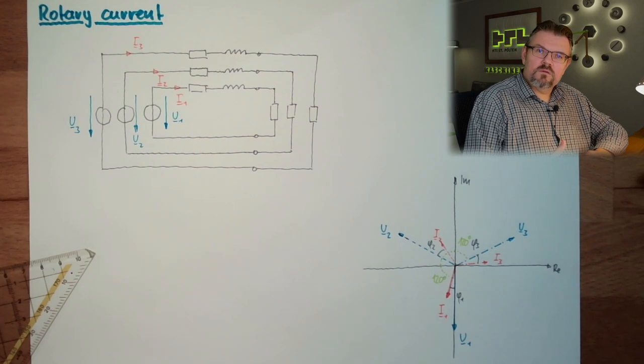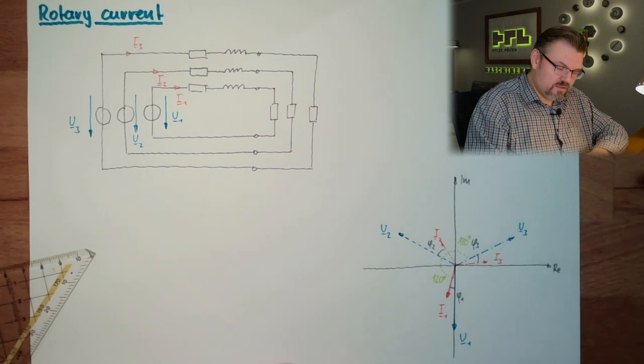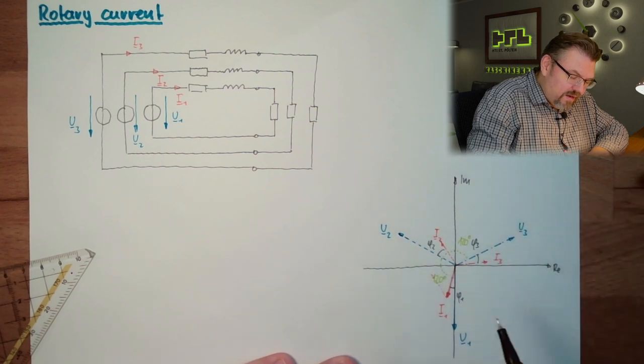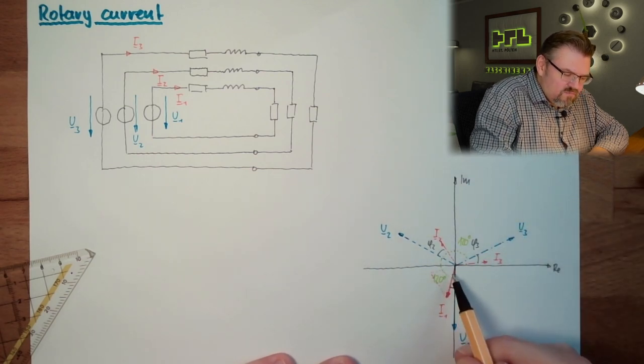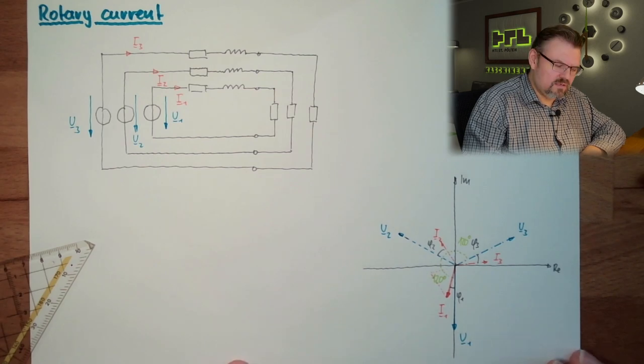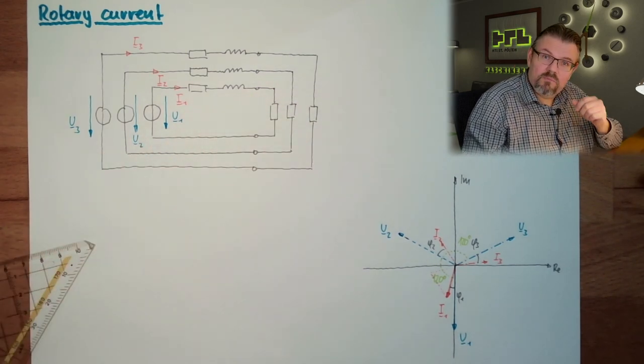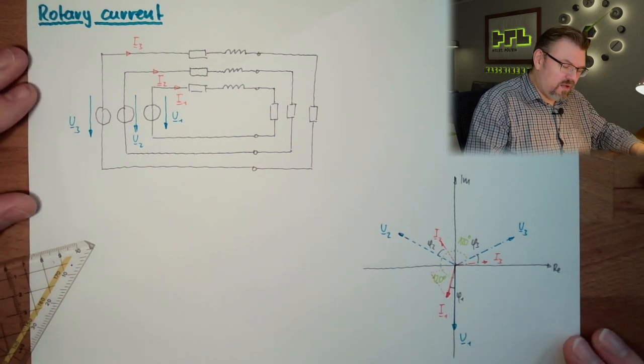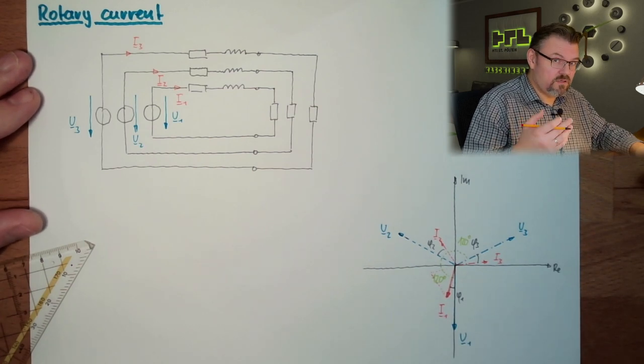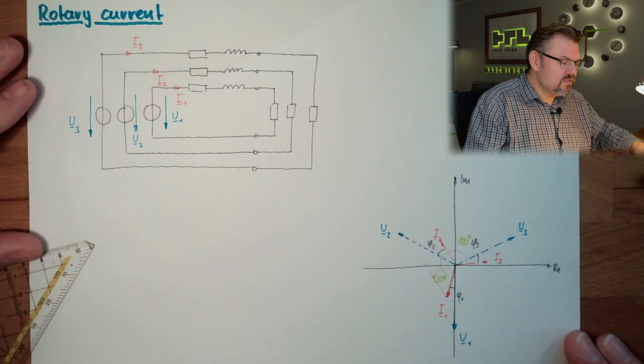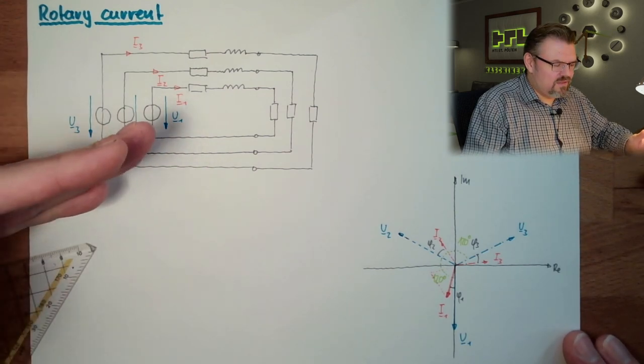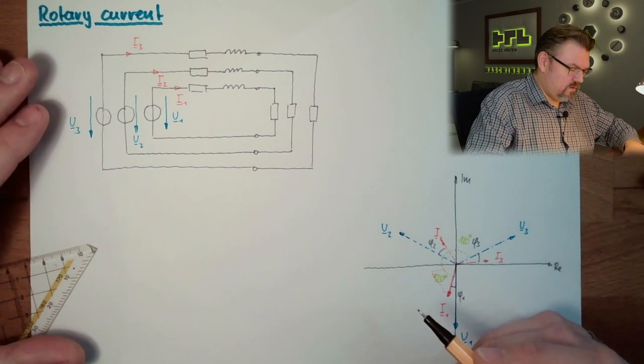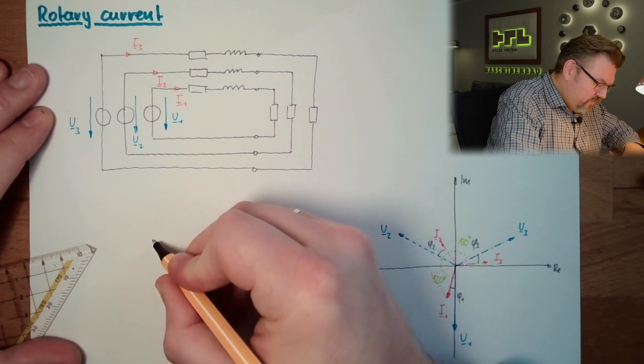But we make simplifications, because look at that. Here we have I1 and here we have I2 and then I3 again. They are compensating each other pretty nicely, not exactly depending on the burdens, but they are compensating each other because of this phase shift of 120 degrees. So this means those lines here - I don't need three lines. I just make one.